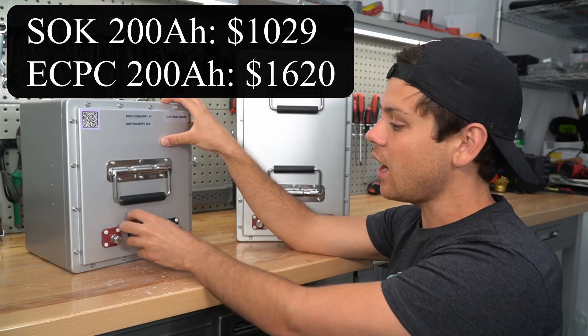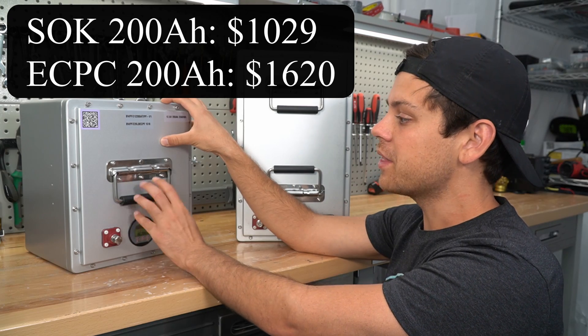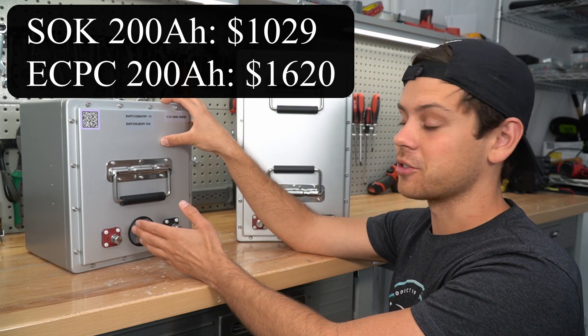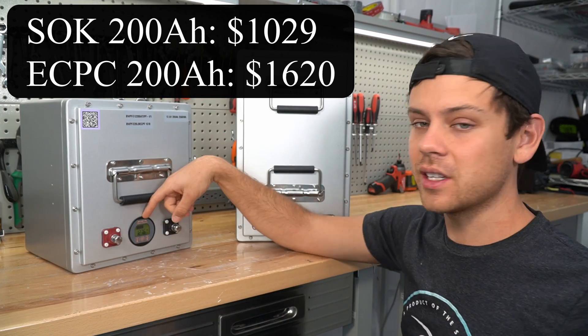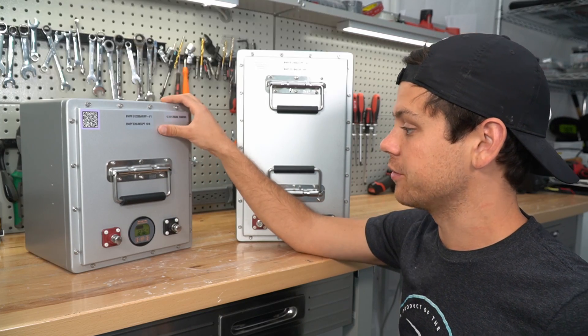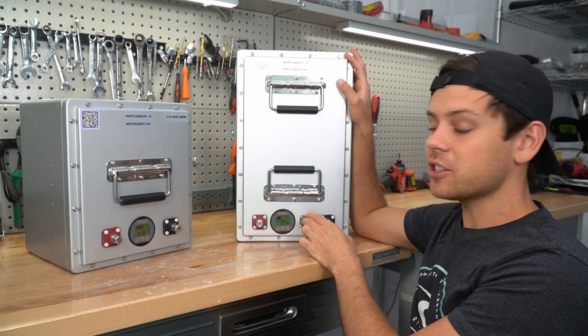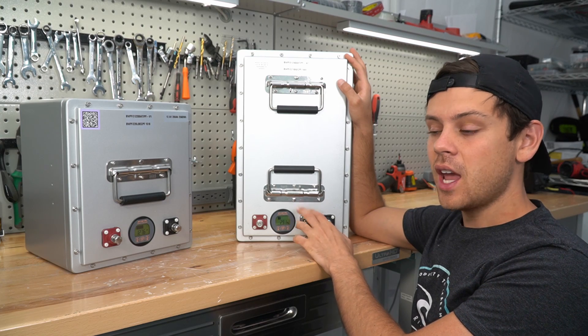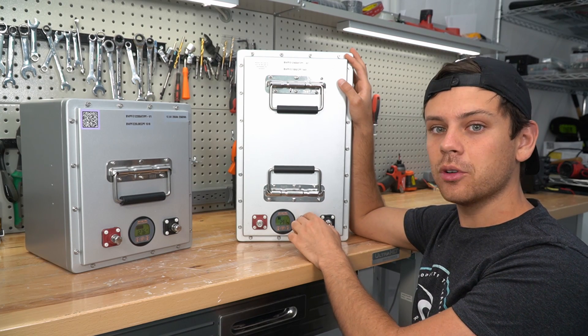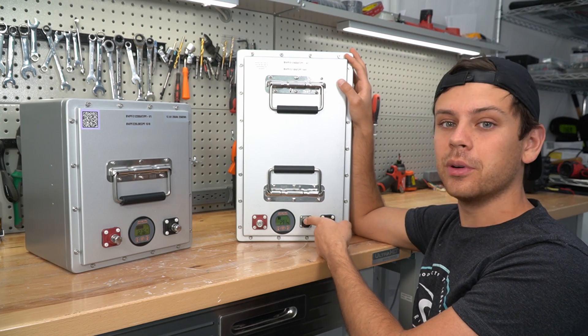The SOK battery does not have a state of charge indicator, but this thing costs $600 more. And besides the state of charge indicator, I don't see many other special features. And the pro version with the multi-pin socket costs $150 more.